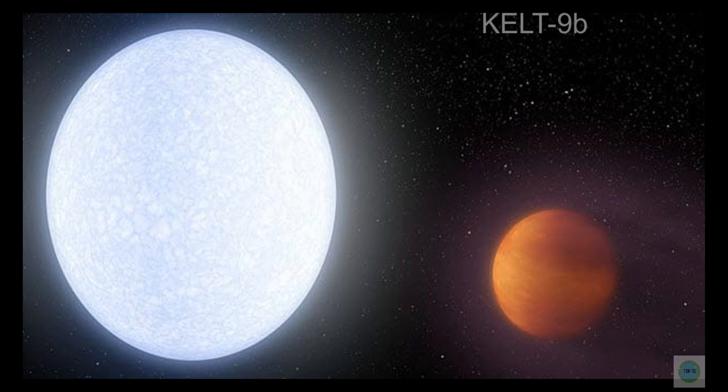Star KELT 9 is gigantic, reaching multiple times the size of our Sun. Exoplanet KELT 9b is multiple times the size of Jupiter and multiple times heavier. The extraordinary temperatures are caused by the relatively short distance between KELT 9 and KELT 9b. Both are so close that the exoplanet finishes a circle in 1.5 days. Mercury is multiple times farther from our Sun than KELT 9b is from KELT 9.